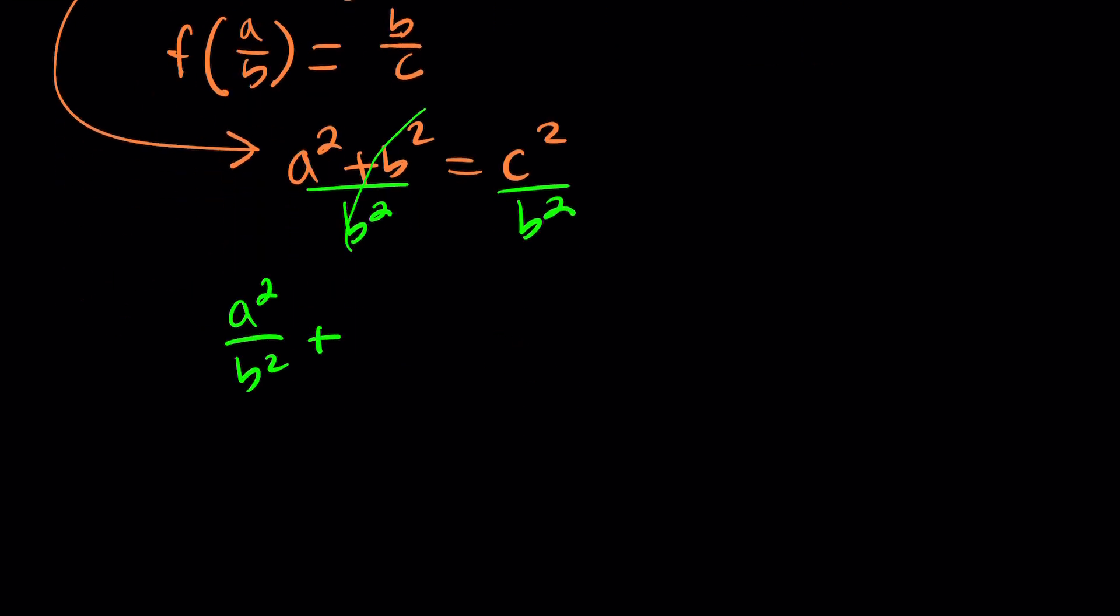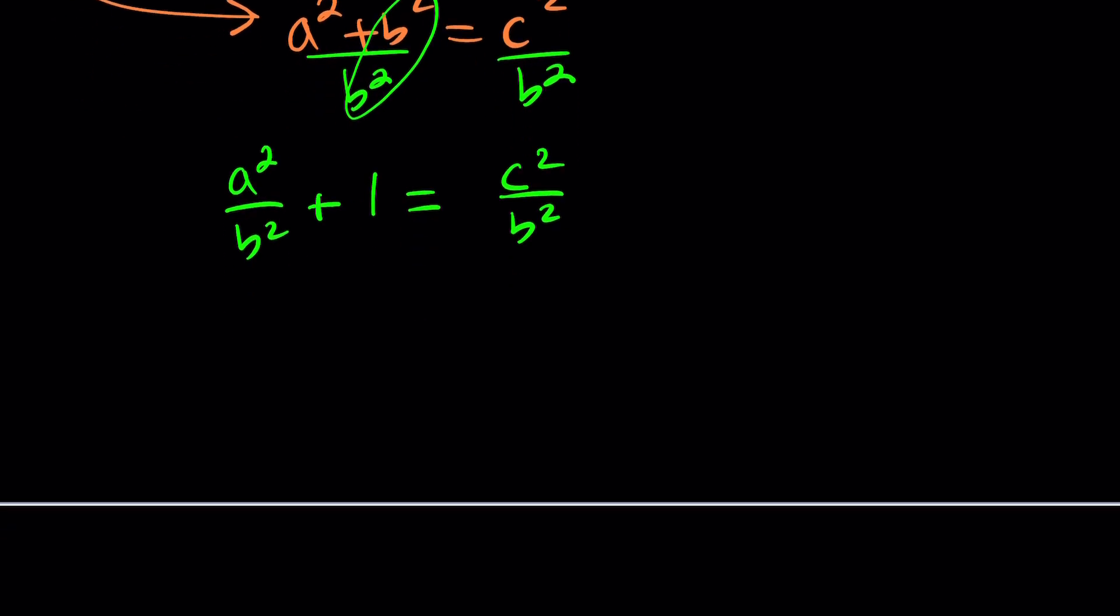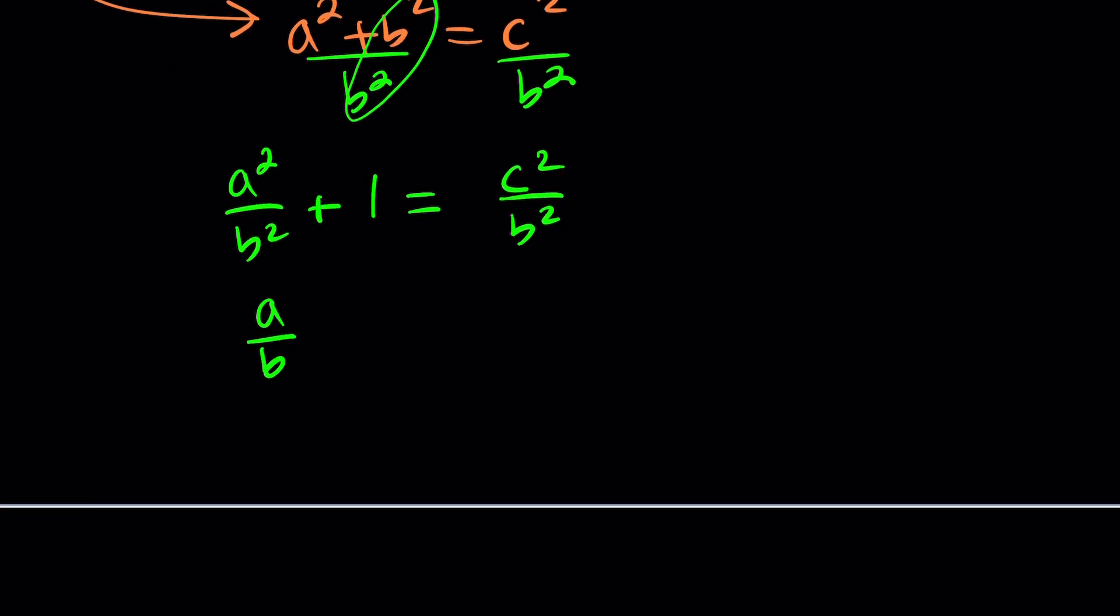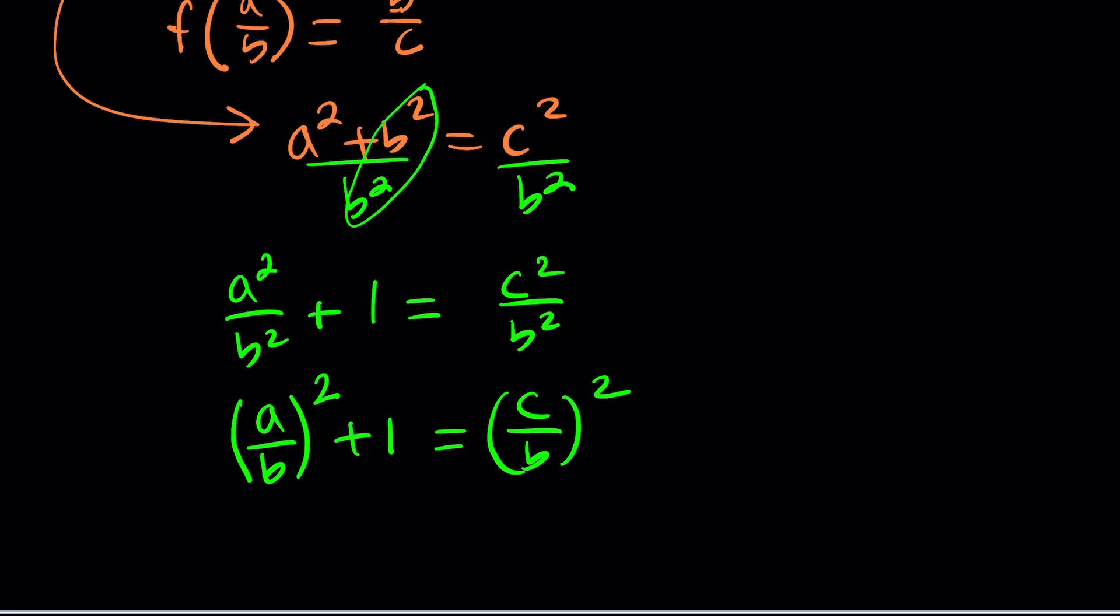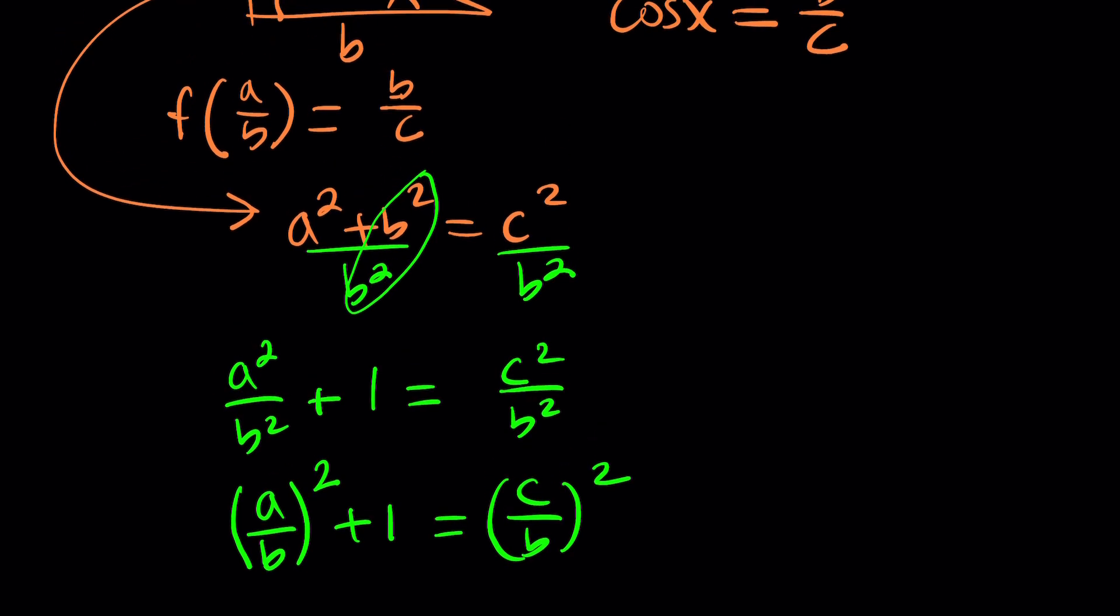And notice that this is going to give you b squared over b squared, which is 1. And this is c squared over b squared. Now we can also write this as a over b quantity squared plus 1 equals c over b quantity squared. And again, you might be asking, what does this have to do with our equation? Well, take a good look.